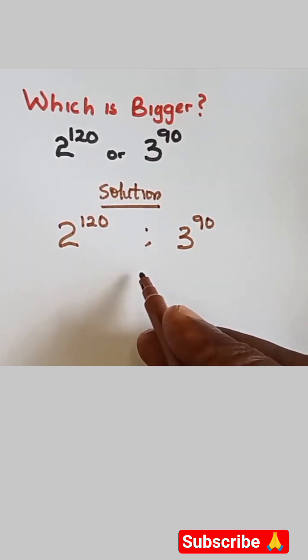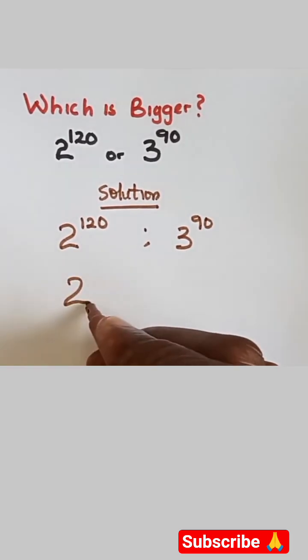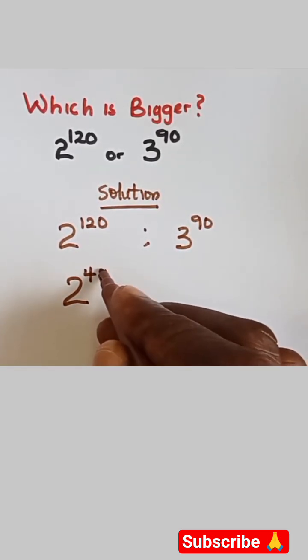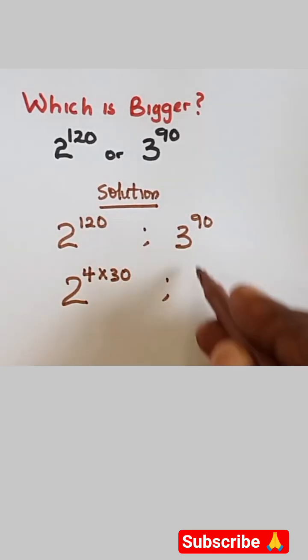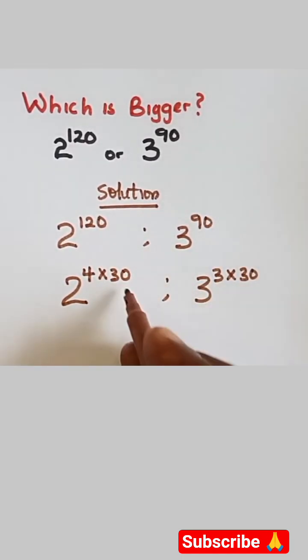So what we do here is we try to make them have the same power. We have 2 raised power 4 multiplied by 30 to give us 120, and also here we have 3 raised power 3 multiplied by 30 to give us 90.